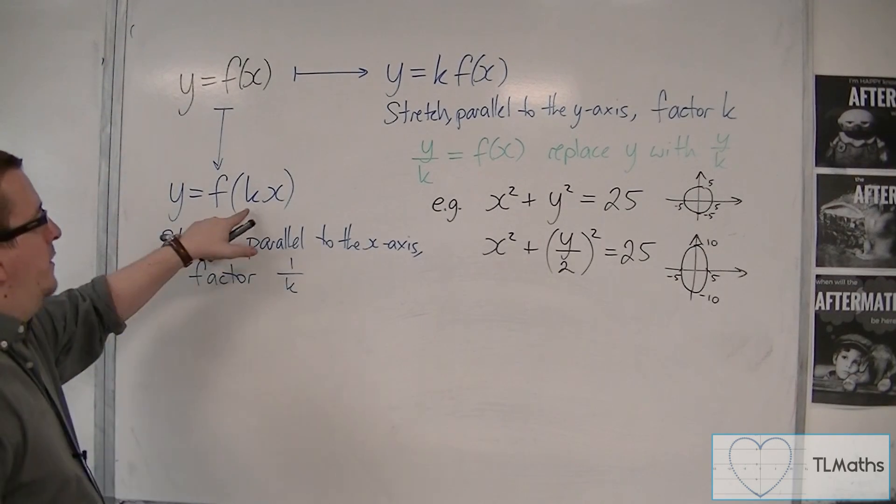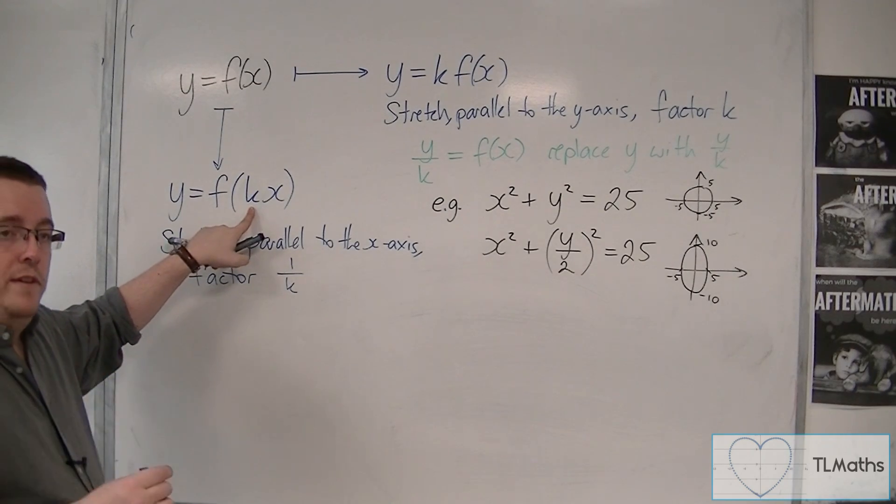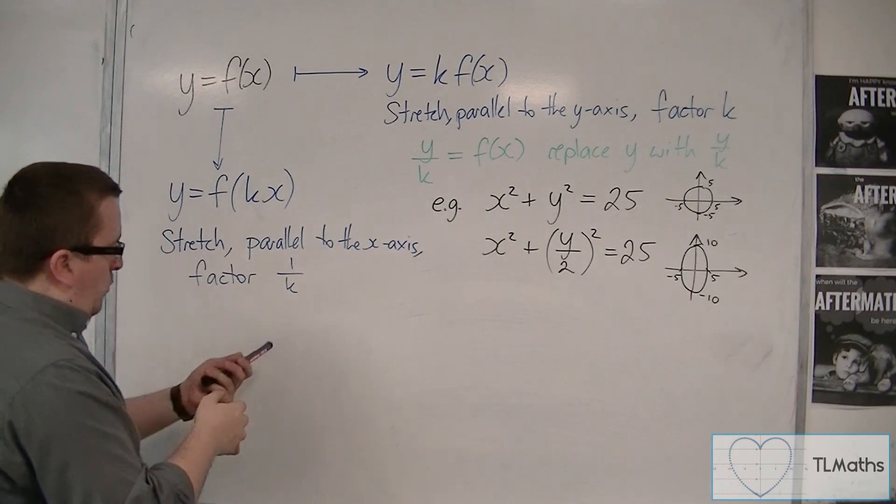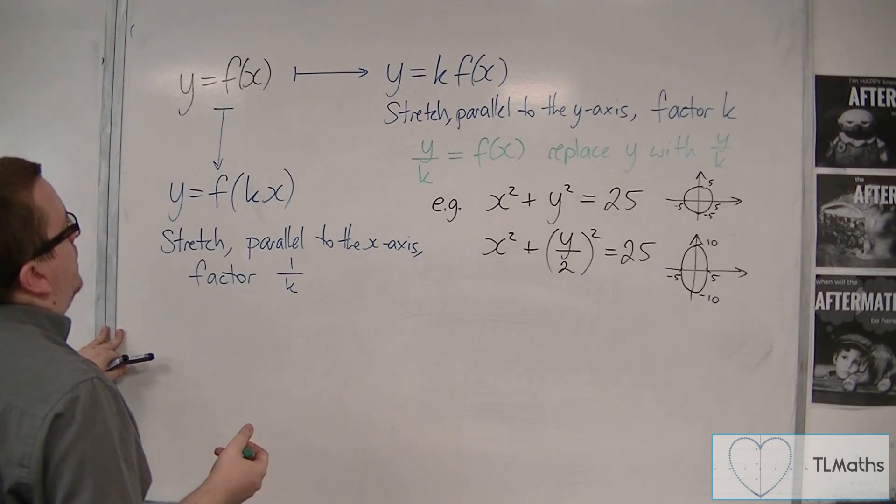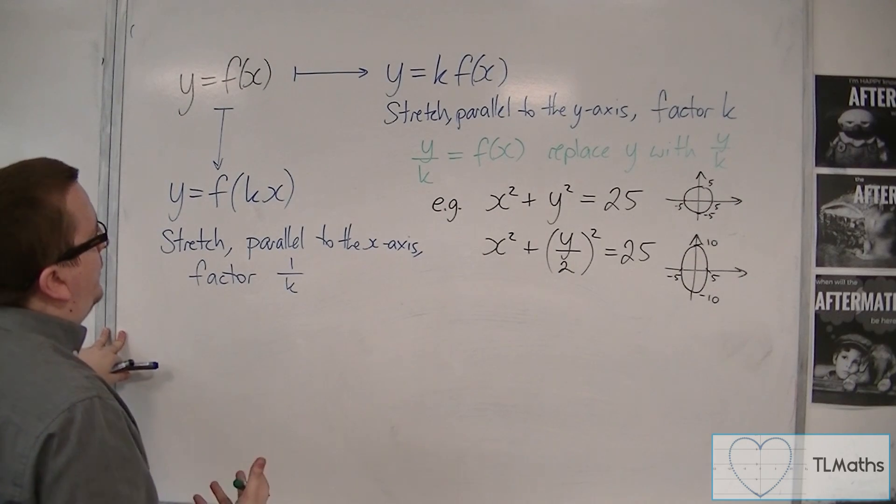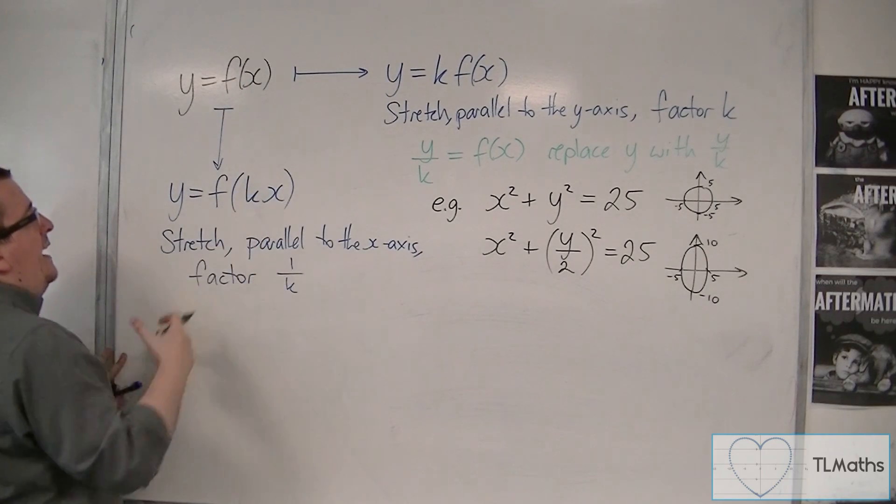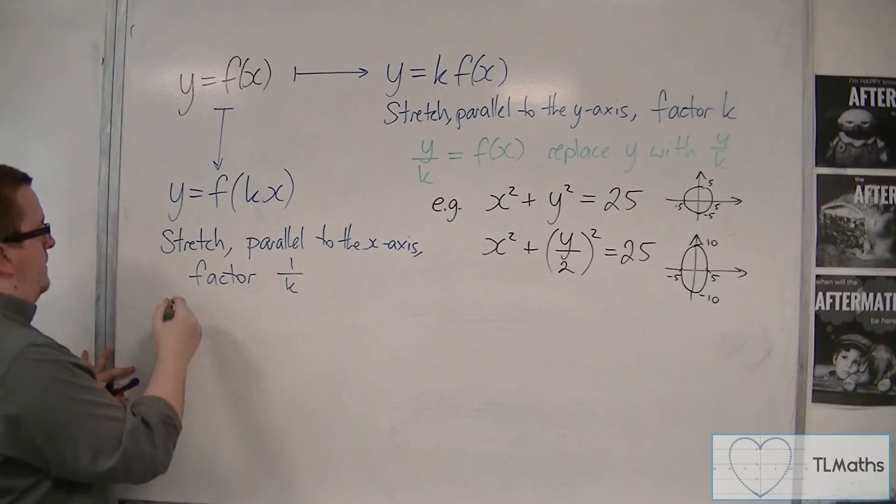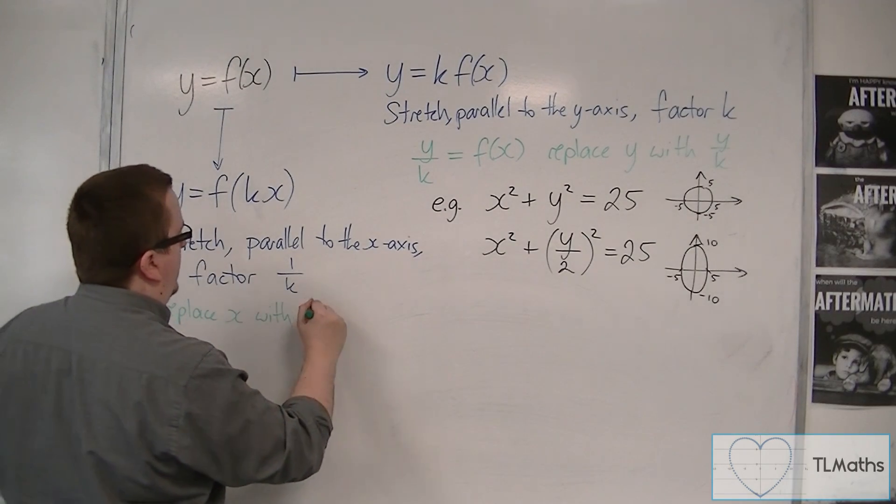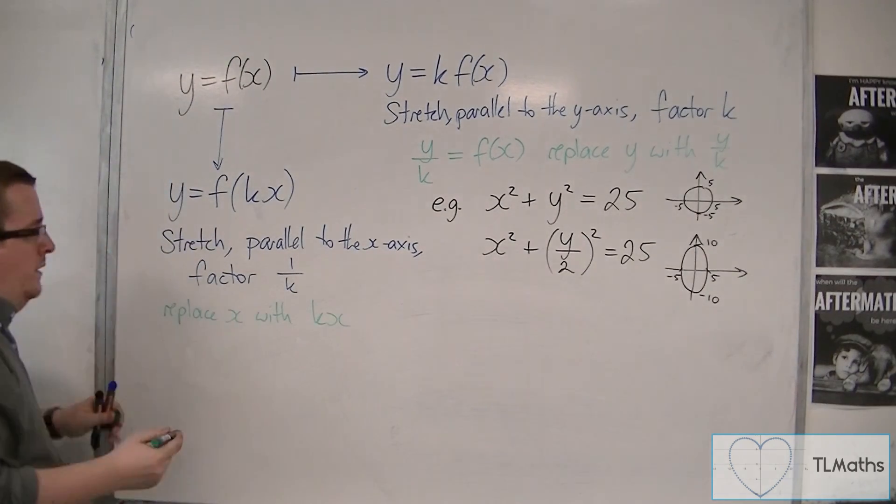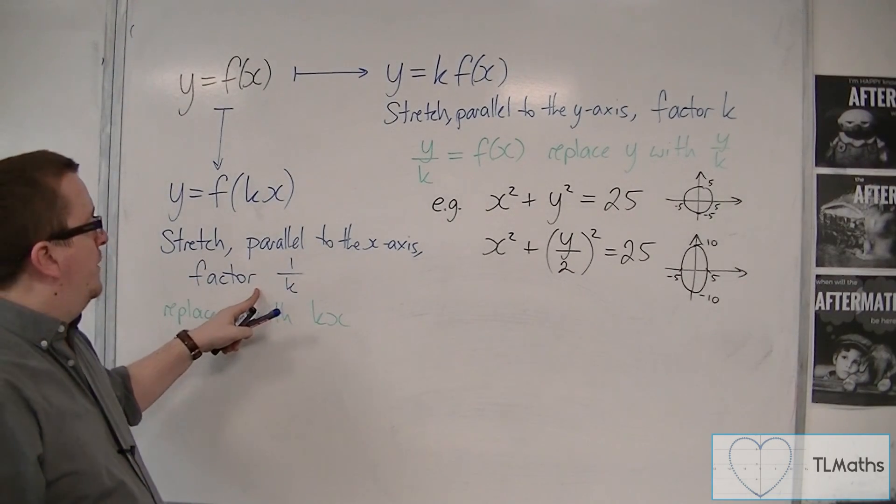So if this was 3x, you would be stretching by a factor of 1 third. So what you're doing here is you're effectively replacing the x with kx here. So replace x with kx. And this gives you a stretch parallel to the x-axis, factor 1 over k.